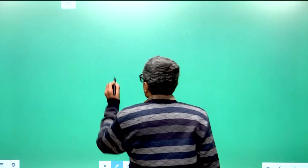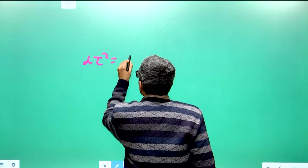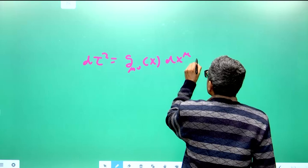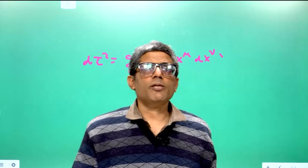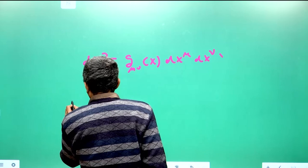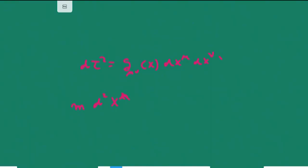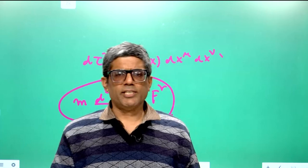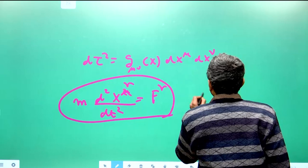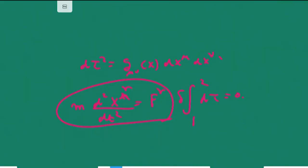In conclusion, the proper time can be written as dτ² = g_μν(x) dx^μ dx^ν, where x means t, x, y, z. Now, what are geodesics? How does a particle travel in a gravitational field? According to Newton's laws, mass times acceleration equals force. But Einstein rejected this equation on the grounds that it is not covariant under spacetime transformations.